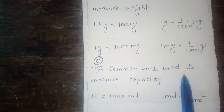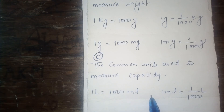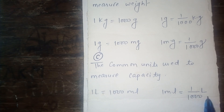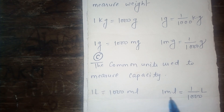The common units used to measure capacity: 1 liter is equal to 1000 milliliters, and 1 milliliter is equal to 1 upon 1000 liter. When liter is converted to milliliter, then multiply by 1000, and when milliliter is converted to liter, then divide by 1000.